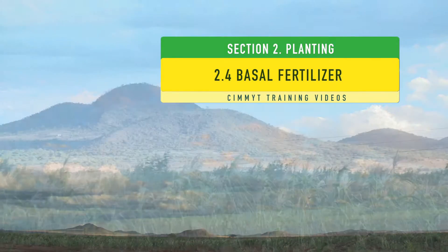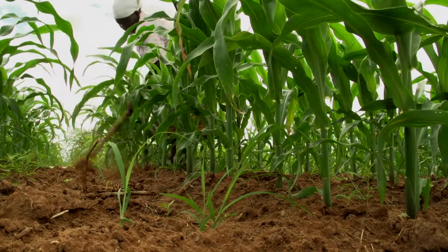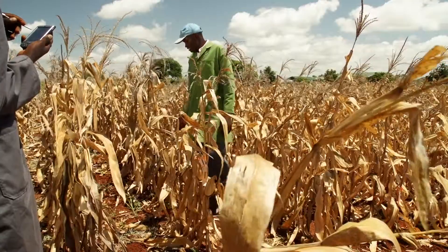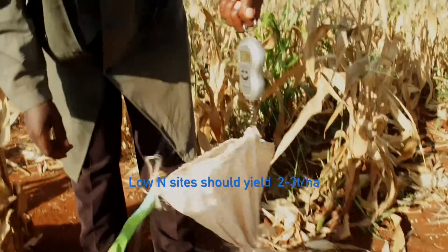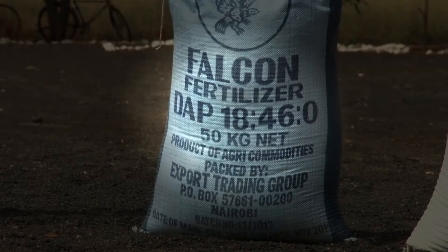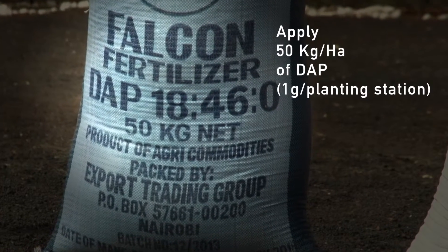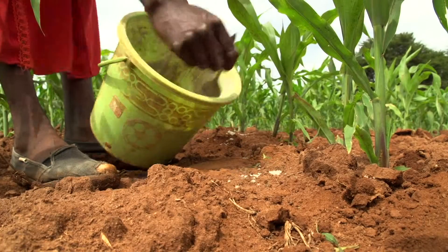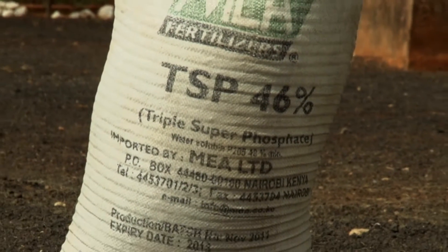In order to identify varieties that will perform well under farmer conditions in sub-Saharan Africa, researchers need to evaluate their varieties under nitrogen stress indicative of prevailing farmer conditions. Good low nitrogen sites should therefore consistently yield between 2 and 3 tons per hectare. To maintain these yield levels, researchers should apply 50 kilograms of ammonium phosphate per hectare at planting. It is important that nitrogen is the only limiting factor within trials, so additional phosphate and potassium fertilizer should be applied at the recommended rate for the location.